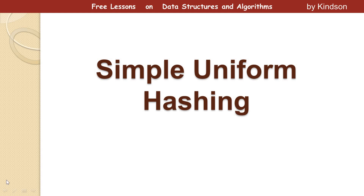This will be a very interesting and short tutorial. This is tutorial 3 on our lesson in hashing. In the previous presentation we discussed there are two ways to resolve collision: one of them is hashing with chaining and the second method is open addressing, and we've already treated hashing with chaining in tutorial 2.